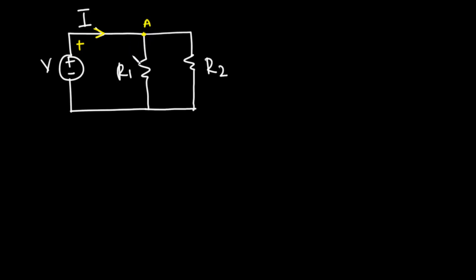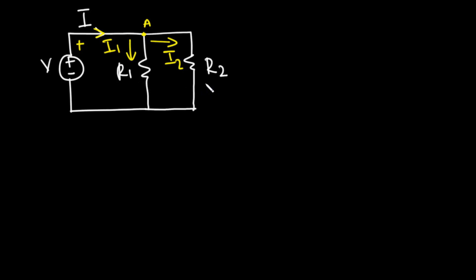Now at node A we have the current dividing, so part of the current will flow through R1 and the rest will flow through R2. Let the current flowing through R1 be I1 and the current flowing through R2 be I2.